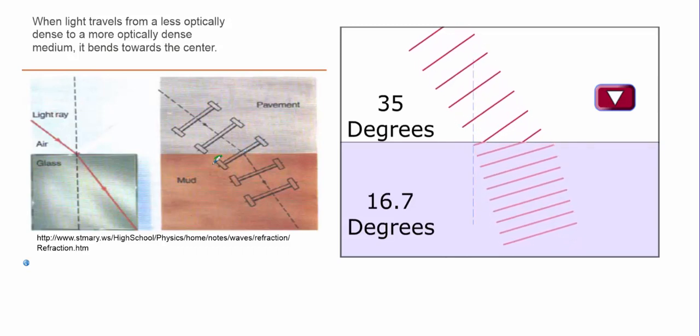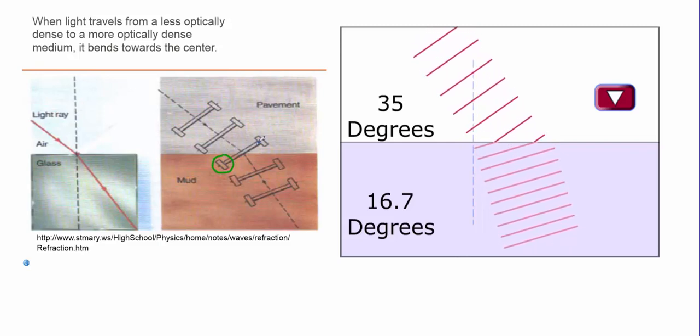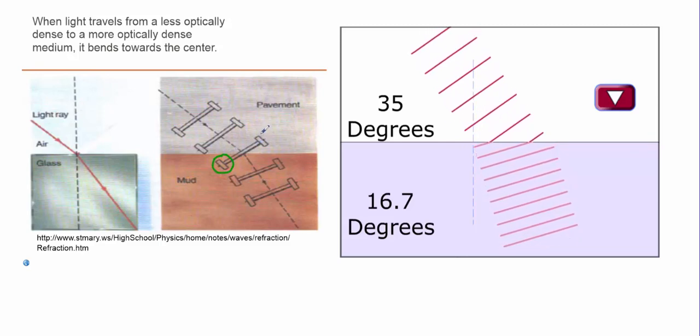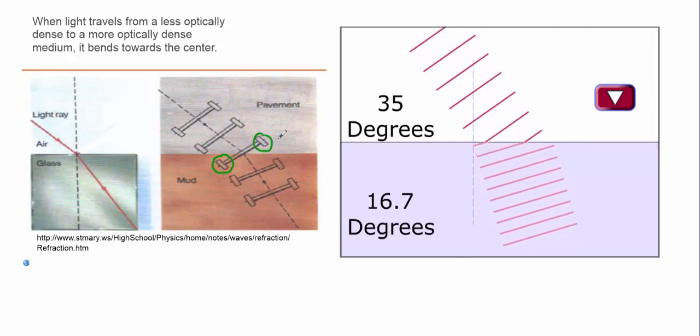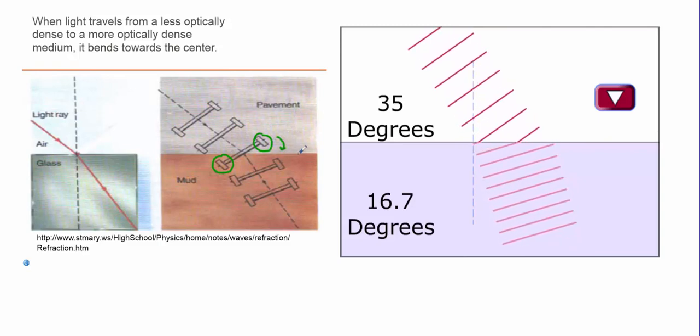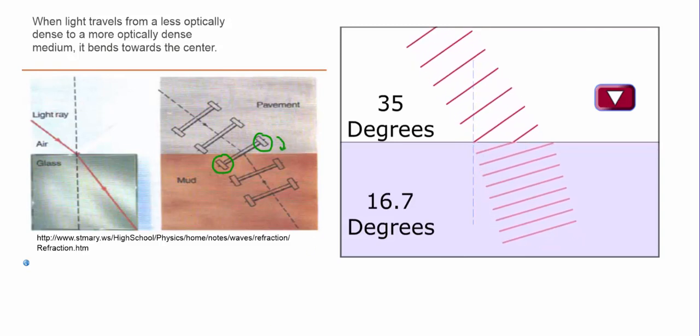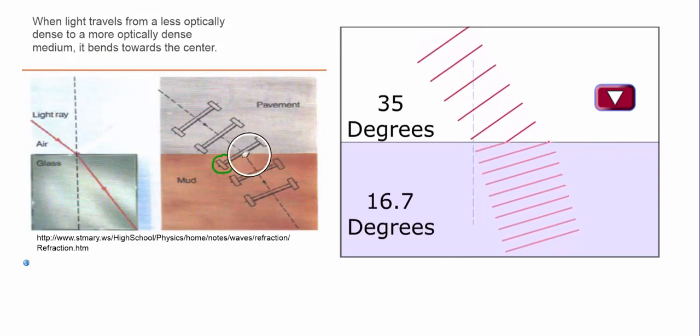As a result, this portion slows down sooner than this portion. This side, over on the right side, is trying to go faster. And as a result, it's going to cause the whole thing to bend inward a little bit. But I'm sure you've experienced something similar to this.